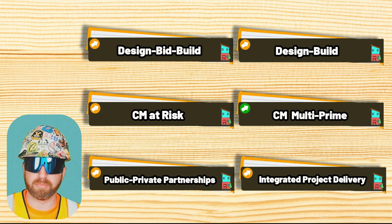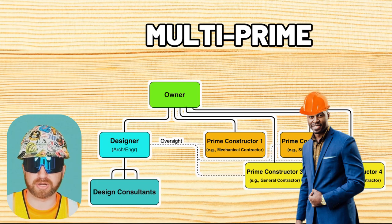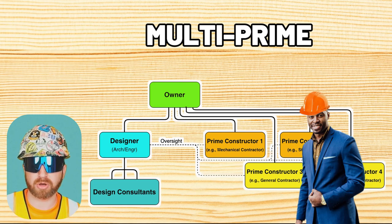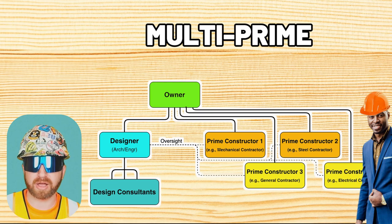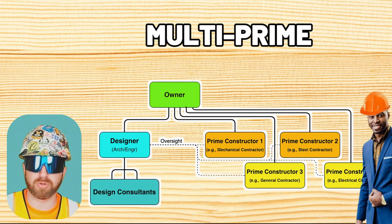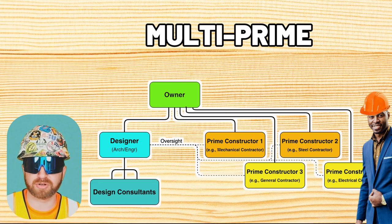Next is Construction Management Multi-Prime or CMMP, also known as multi-prime. Here, the owner essentially acts as their own general contractor, holding not one contract with a single GC but multiple contracts with trade or prime contractors — the biggest players in scope and dollar value on a project. This method is for owners who fully understand construction and want direct communication with each contractor. However, it can get messy and costly if the owner doesn't understand all the coordination that takes place between contractors behind the scenes.